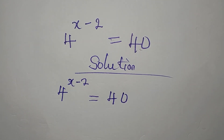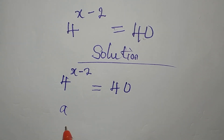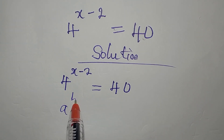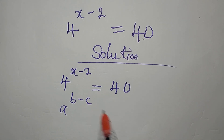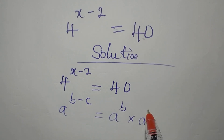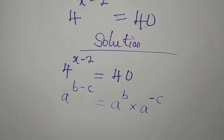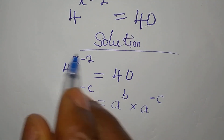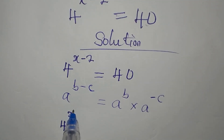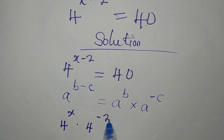The first step I want to take is this. Do you know that if you have a to the power of b minus c, this can be written as a to the power of b multiplied by a to the power of negative c, using one of the laws of indices? So from there, we're going to have 4 to the power of x multiplied by 4 to the power of negative 2, and the whole of this is equal to 40.